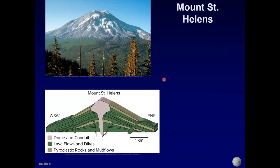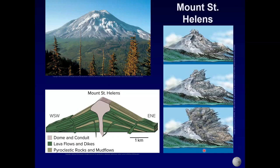Now, Mount St. Helens. We're looking at a picture of it and then a cross section prior to the 1980 eruption. It had a central vent and layers of lava flows, pyroclastic rocks, and mud flows — that's its eruptive history, showing these different types of geologic materials. There was also evidence for horizontal eruptions of ash.